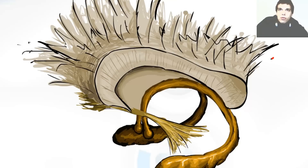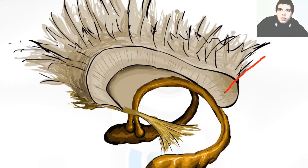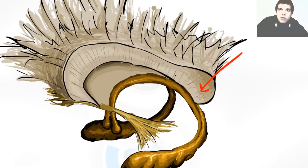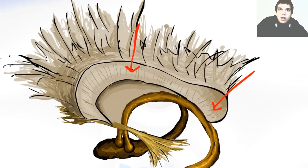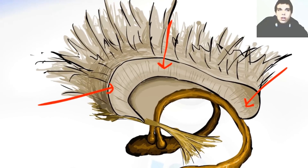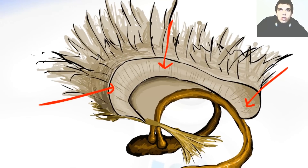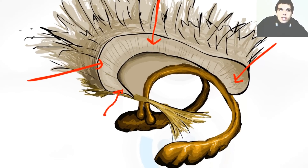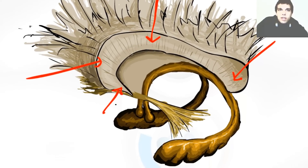The posterior portion of the corpus callosum is the splenium. The middle portion is the body. The most anterior part of the corpus callosum is called the genu, which means the knee. This part that projects inferior and posterior is called the rostrum.